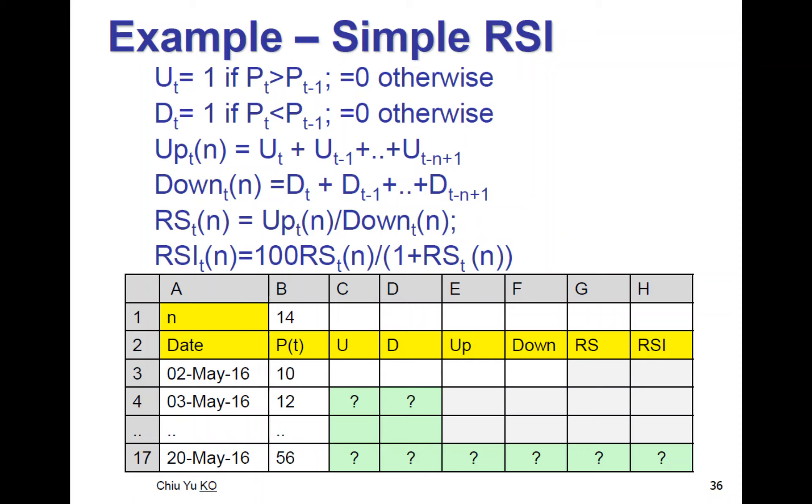We calculate the relative strength index. It's very simple. If today's price is higher than yesterday, then you set U to 1 otherwise 0. If today's price is lower, you set D to 1 otherwise 0. And then Up is the sum of the past n-day U, and Down is the sum of the past n-day D. And then RS is the ratio of Up to Down. And RSI is normalized RSI: it's 100 times RS over 1 plus RS. So that's how you can calculate.